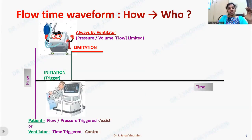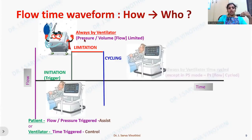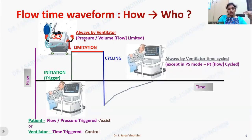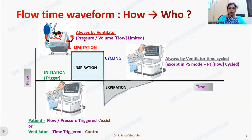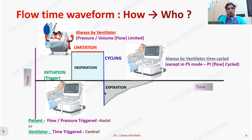The limitation of the breath is always done by the ventilator, and it can be either pressure or flow. If pressure-limited, we call it a pressure-limited breath; if volume or flow-limited, we call it volume-controlled ventilation or pressure-controlled ventilation. Cycling is almost always done by the ventilator, except in pressure support mode where it is done by the patient via flow cycling. So the initiation, limitation, and cycling together lead to inspiration and expiration — giving us the inspiratory and expiratory waveforms in the flow-time scalar.